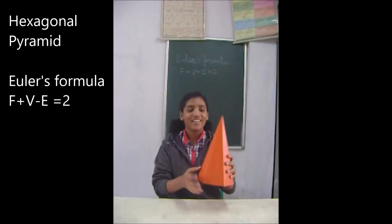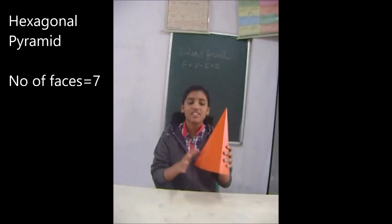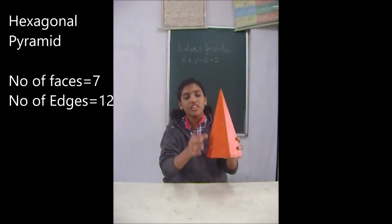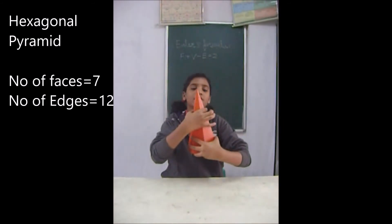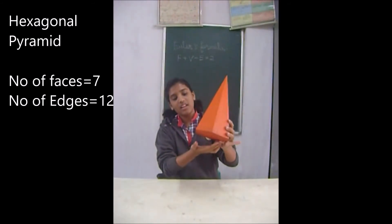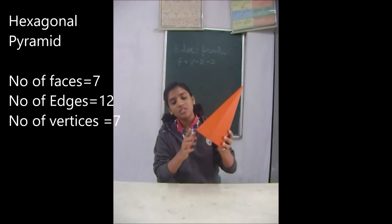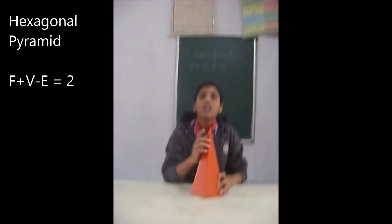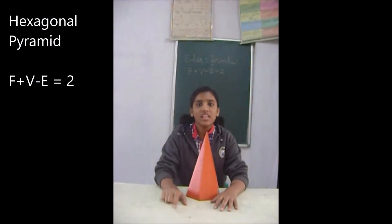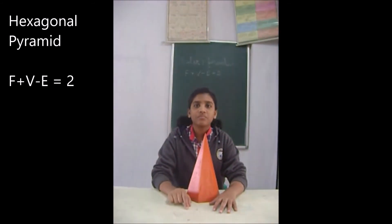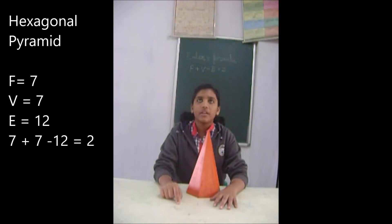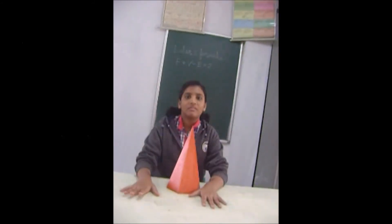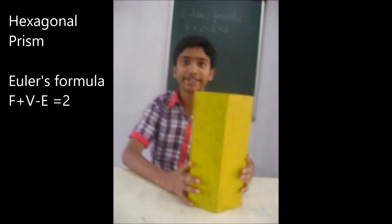This is the hexagonal pyramid. This is the base of the pyramid. There are 7 faces — 1 through 7. There are 12 edges — 1 through 12. The vertices are 7 — 1 through 7. According to Euler's formula, F plus V minus E equals 2. F equals 7, V equals 7, E equals 12. So 7 plus 7 minus 12 equals 2. Verified for the hexagonal pyramid.